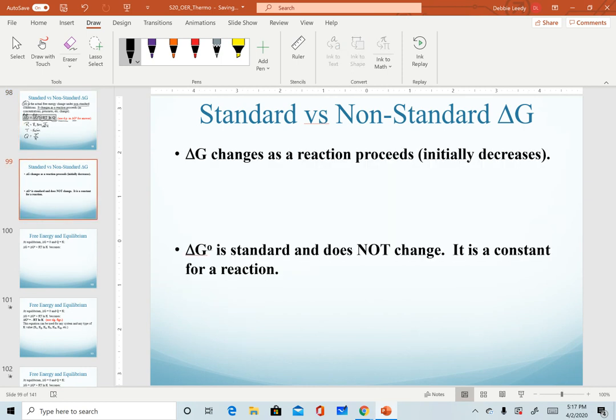A reminder, because this is a very critical point to understand for this chapter, is that our non-standard delta G value is what changes as a reaction proceeds. This will initially decrease. If you remember from a rough sketch of our video on the graphs, if we were to sketch a reaction profile, recognize that at time zero, when we're starting just with reactants, our reaction always has to decrease in terms of delta G.